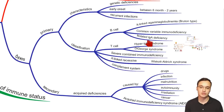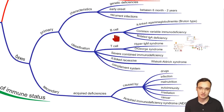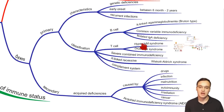We are not concerned with the secondary type here; we are concerned with the primary one, and especially with IgA deficiency, which is a B cell defect. Primary immunodeficiency can be categorized into B cell defects, T cell defects, or other types, and IgA deficiency is a B cell defect.